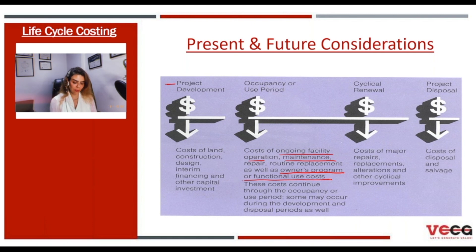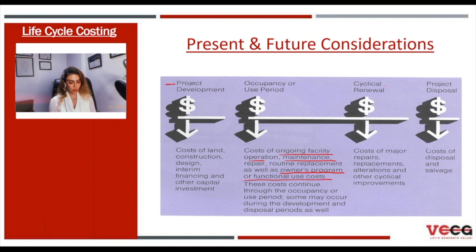This presentation references SAVE International. Regarding cyclical or renewal expenses, we have costs related to major repairs, replacement, alteration, or other cyclical improvements that could happen during the project lifecycle. And finally, project disposal, which could be the cost of disposal or the salvage value.